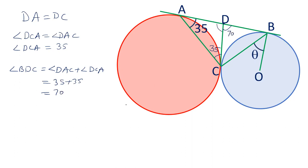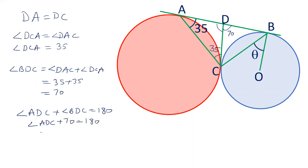Now we have to find angle ADC. Angle ADC plus angle BDC equals 180 degrees. Angle ADC plus 70 equals 180 degrees, so angle ADC equals 110 degrees.